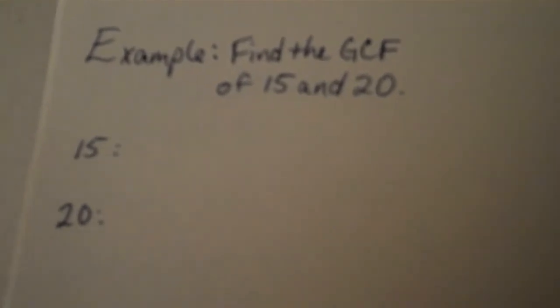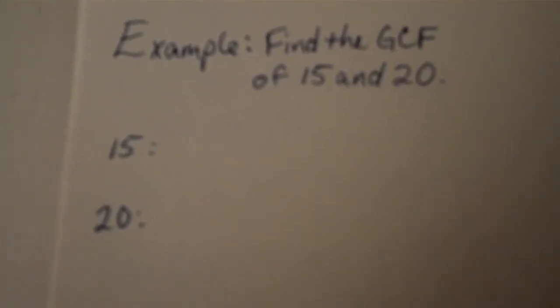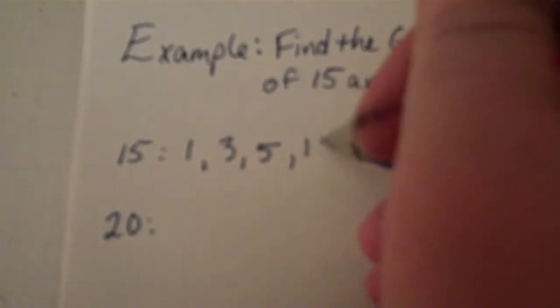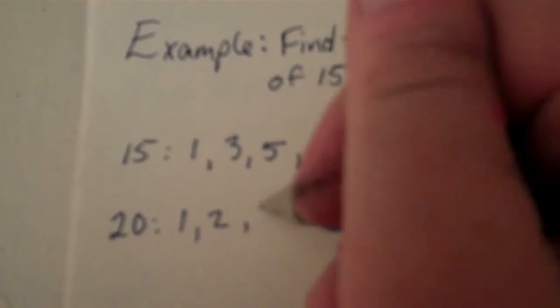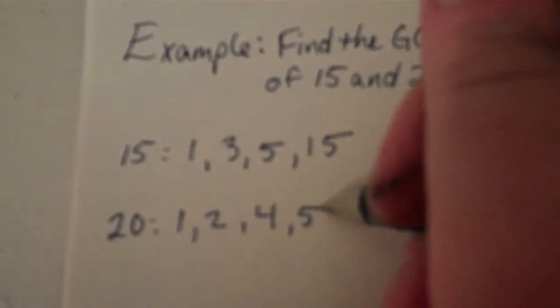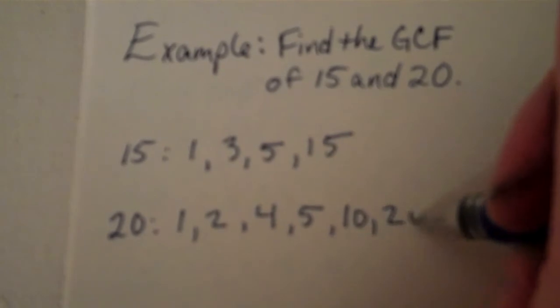Find the greatest common factor of fifteen and twenty. First I'm going to list the factors. Factors of fifteen are one, three, five, and fifteen. The factors of twenty are one, two, four, five, ten, and twenty.